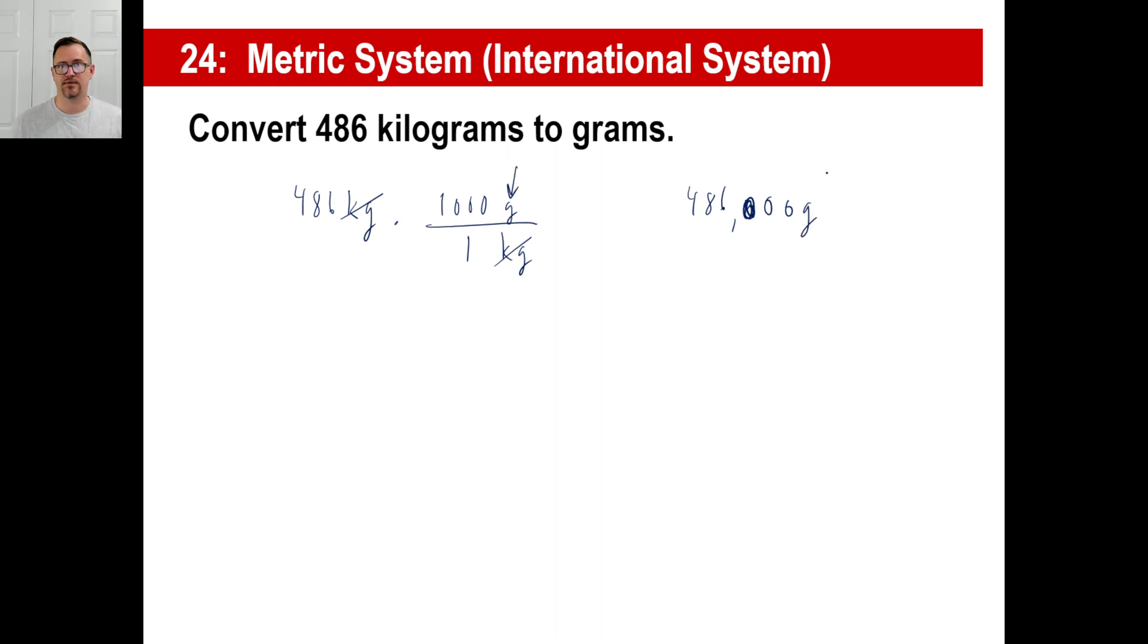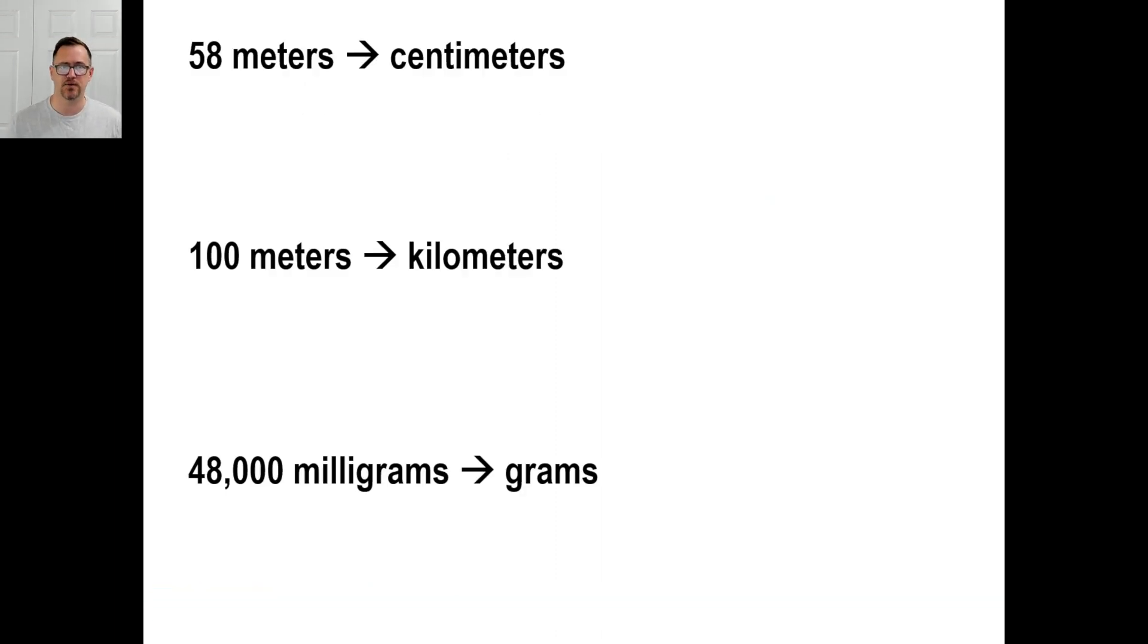All right, on page 83 try those three practice problems and see how you do. At least do the first and then pause it and come back. 58 meters to centimeters - write what you're given: 58 meters. Write a new fraction, you multiply. You know there has to be meters on the bottom. Well, one meter is the same thing as 100 centimeters. Then meters cancel out and 58 times 100 is 5800 centimeters.